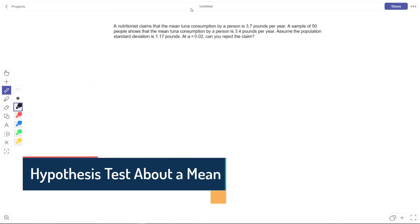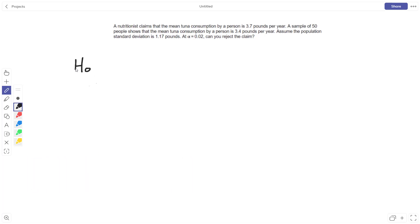All right, we have a nutritionist claims that the mean tuna consumption by a person is 3.7 pounds per year. So our null is what they are telling us, 3.7 pounds per year. We'll figure out our alternative here in a second.